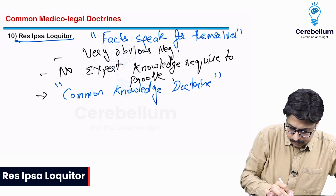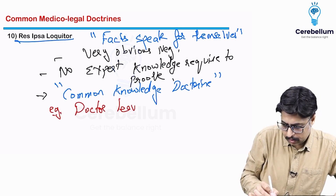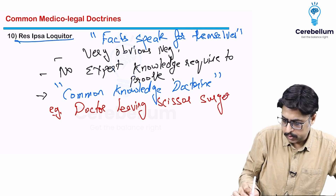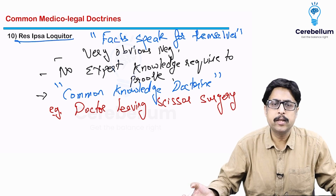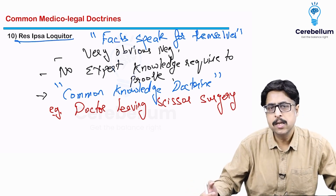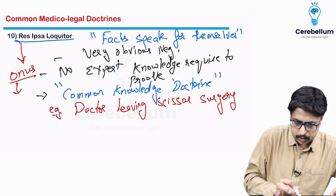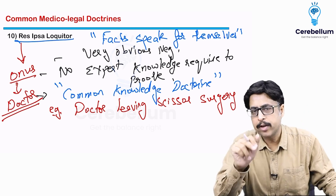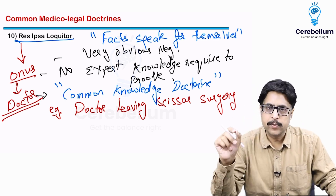For example, a doctor leaving a scissor inside the abdominal cavity after surgery. It is so obvious that you don't even need to prove whether it is true or false — whose negligence it is is very clear. So here the onus of proof will lie with the doctor. If the doctor wants to prove innocence, the onus lies with the doctor, not the patient. This is one of those exceptions where the onus of proof lies with the accused.